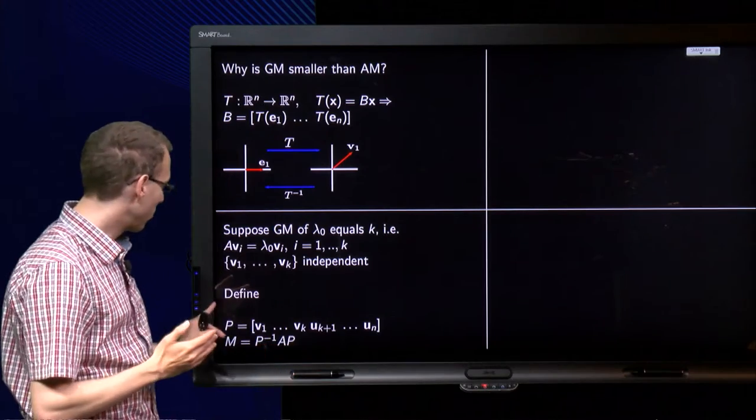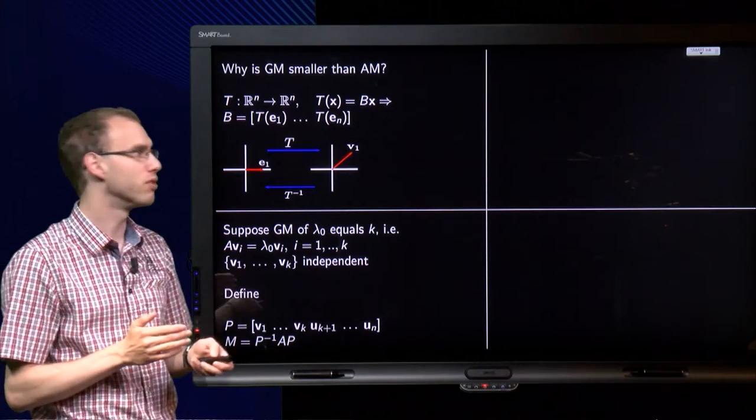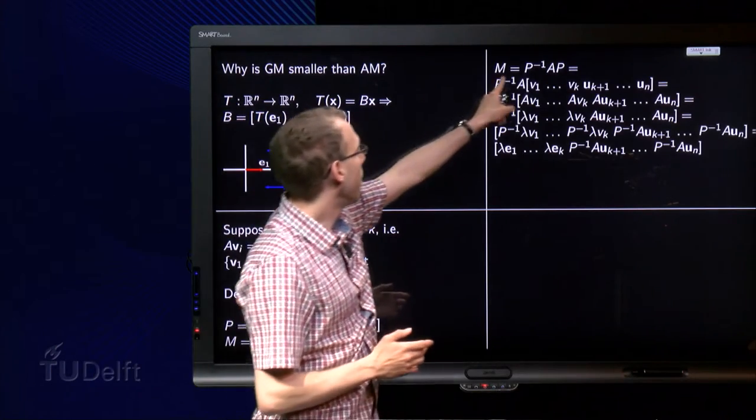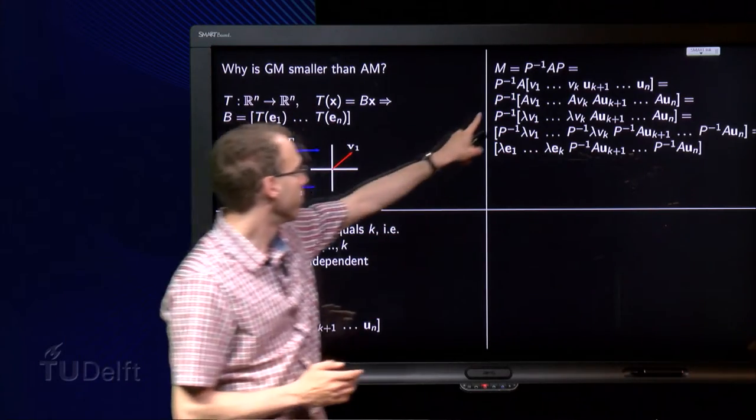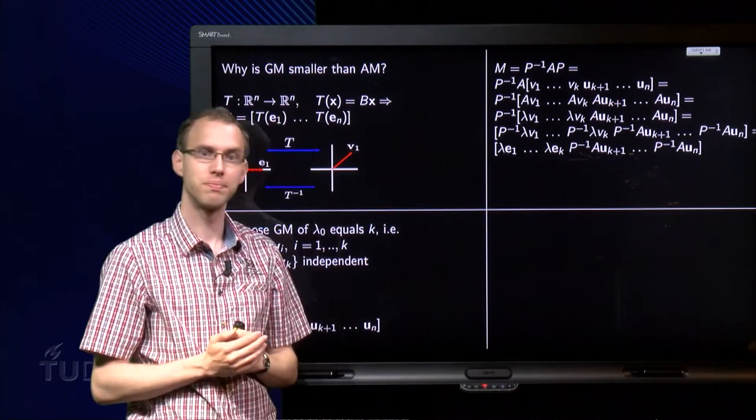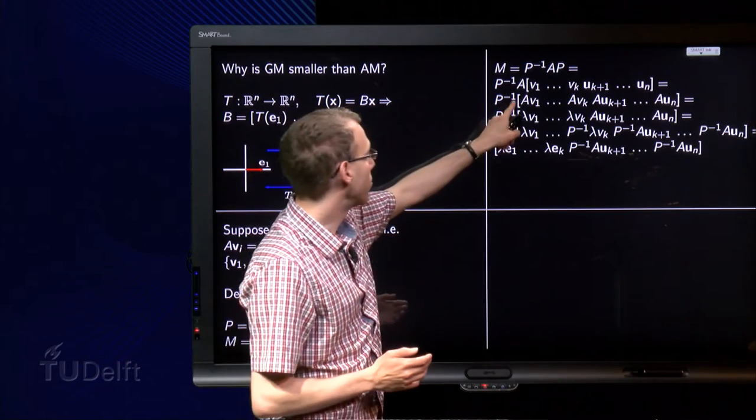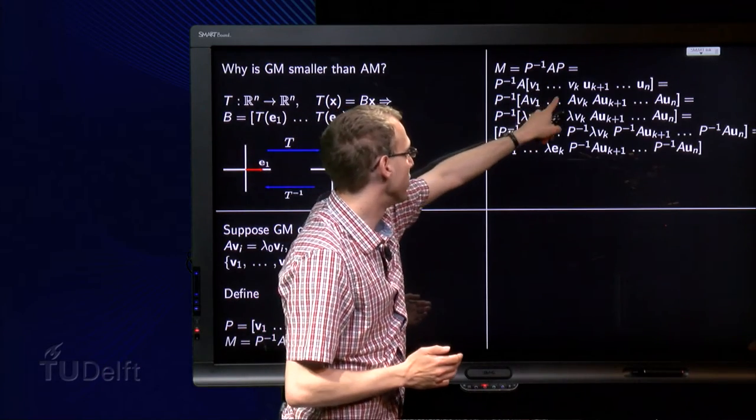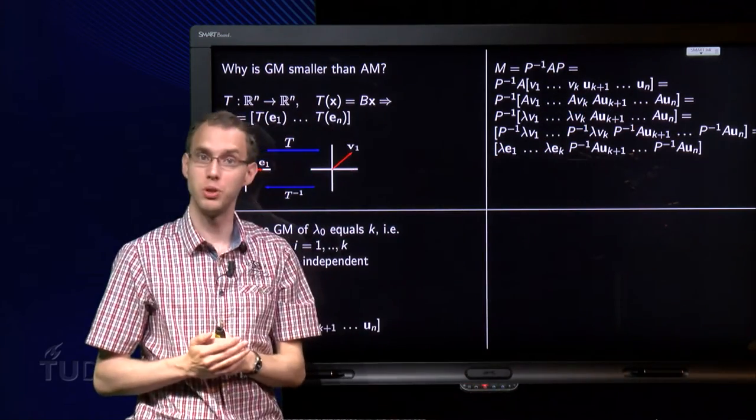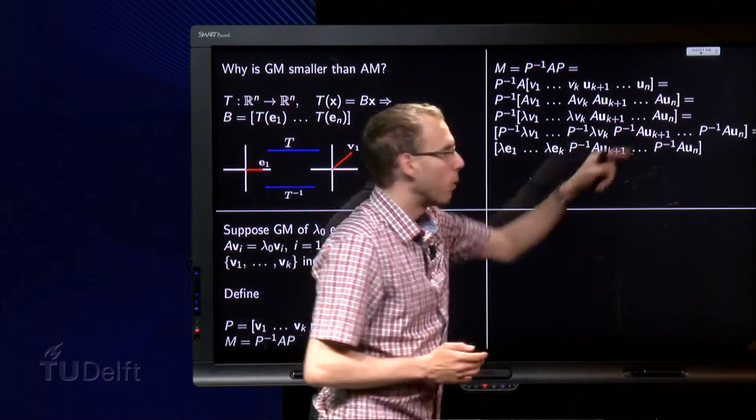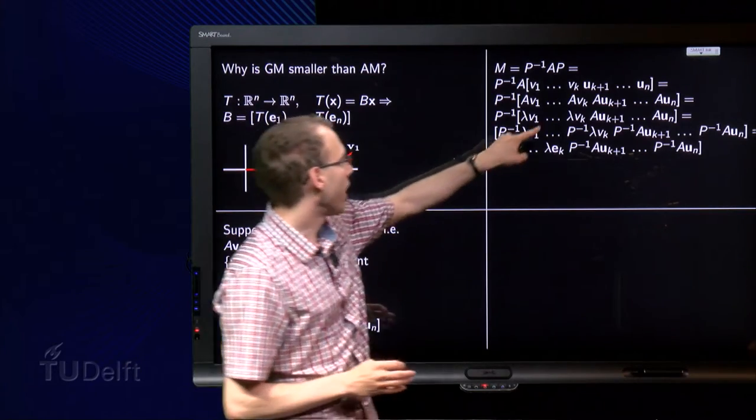So now we are going to look at the eigenvalues of M. First we are going to play around a bit with the matrix M. Because P inverse AP. So MP inverse AP equals P inverse A. Here we have this big P and we put it over here. Then we compute A times this matrix P. We get these new columns A times v1, A times v2 up to A times vk. And A times uk+1 up to A times un. Now, what happens over there? We don't care.